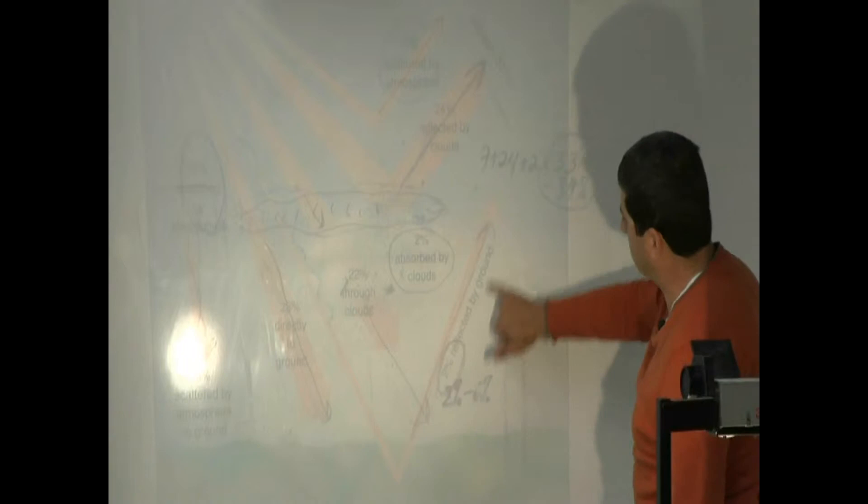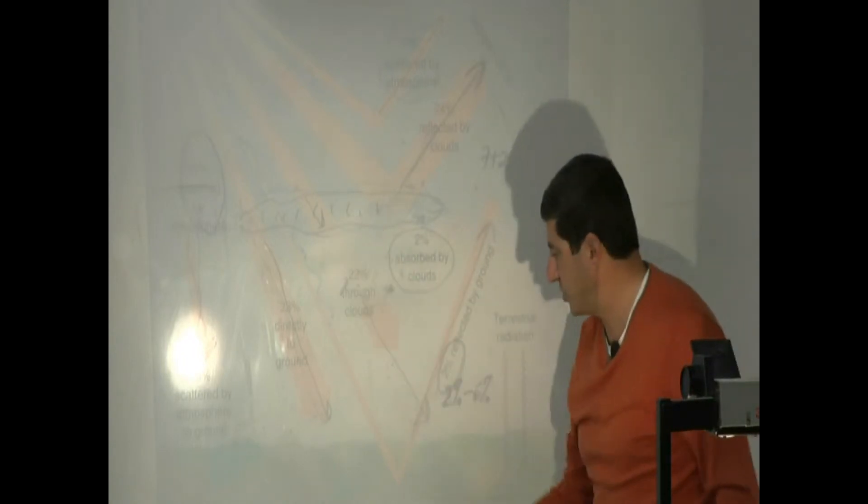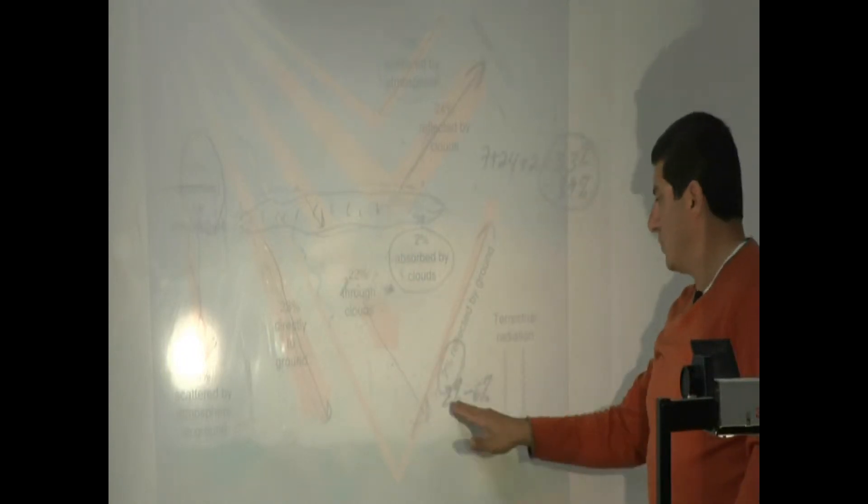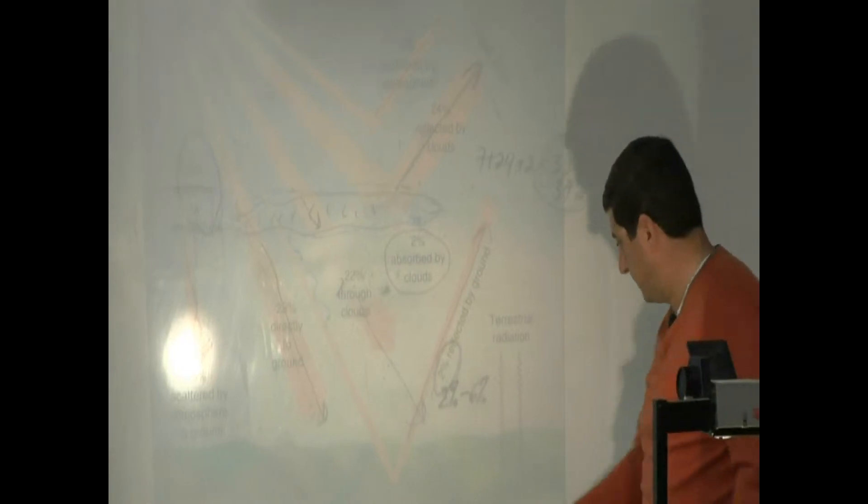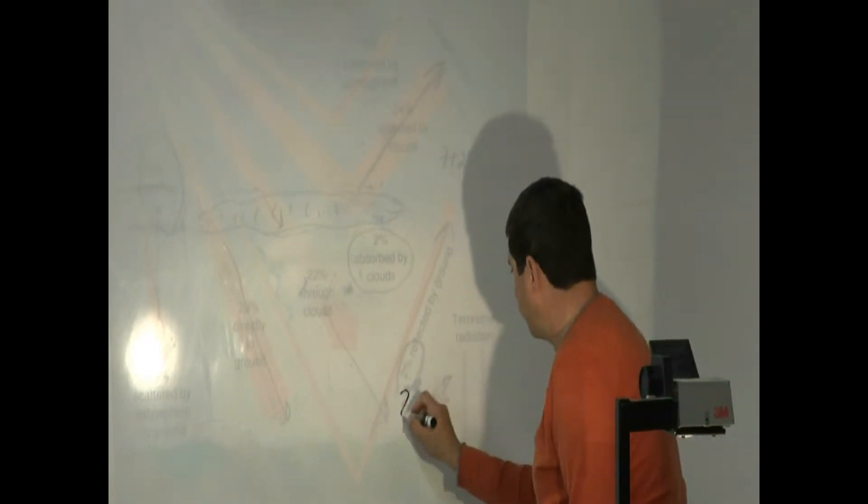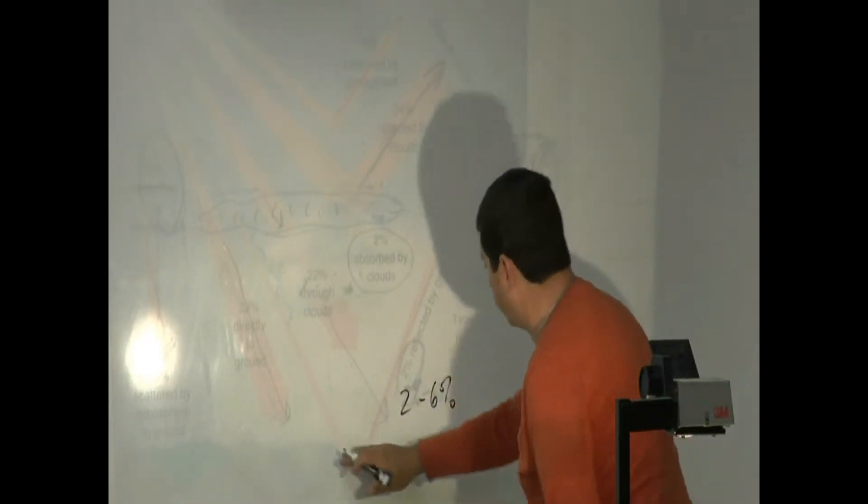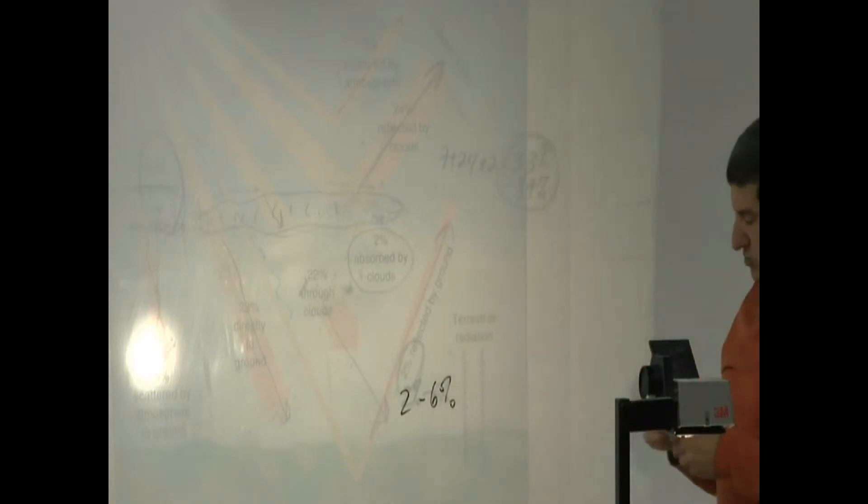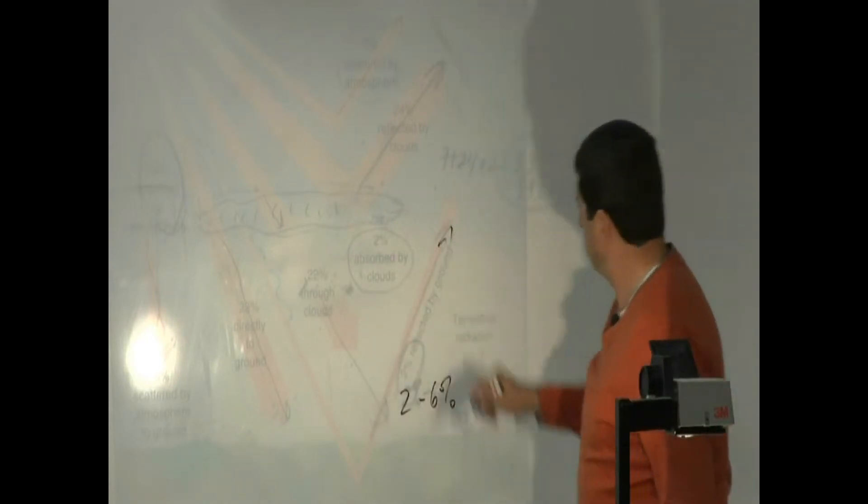2% is reflected by the ground. So some of the energy comes and is reflected. We can say roughly between 2% to 6% of the energy is reflected by the ground.